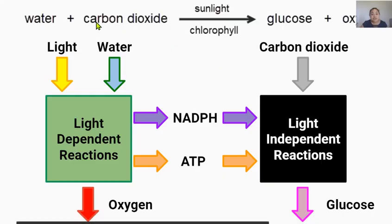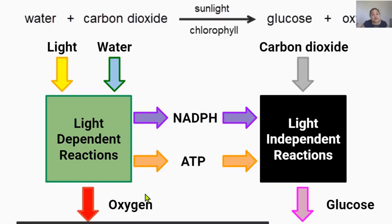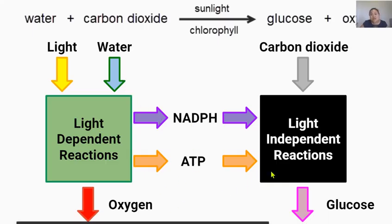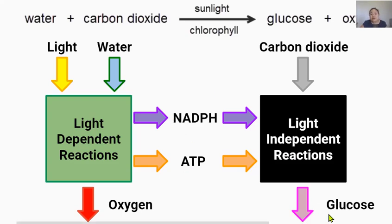You must remember this word equation: water plus carbon dioxide in sunlight makes glucose and oxygen. You must also remember that all of the chemical pathways are controlled by enzymes. For your exam, you need to know the reactants and products in each reaction. In the light-dependent reactions, the reactants are light and water, and the products are NADPH, ATP, and oxygen. In the light-independent reactions, the reactants are NADPH, ATP, and carbon dioxide, and the product is glucose.